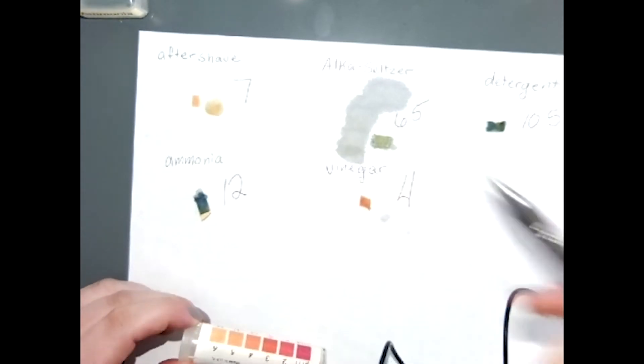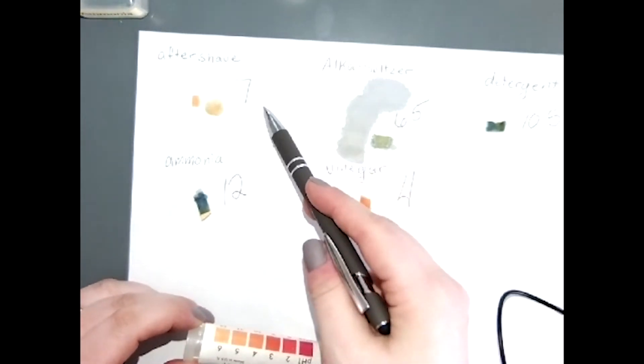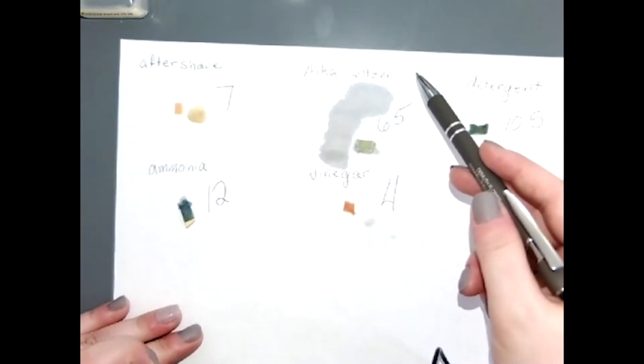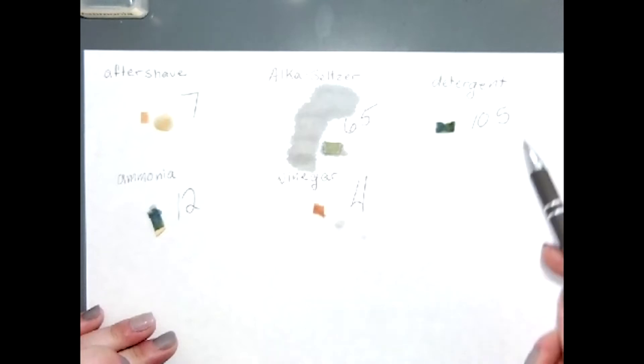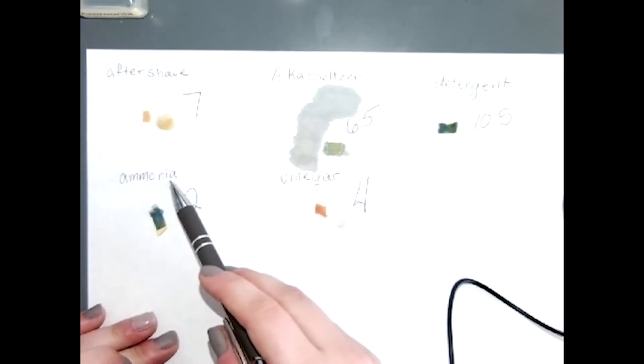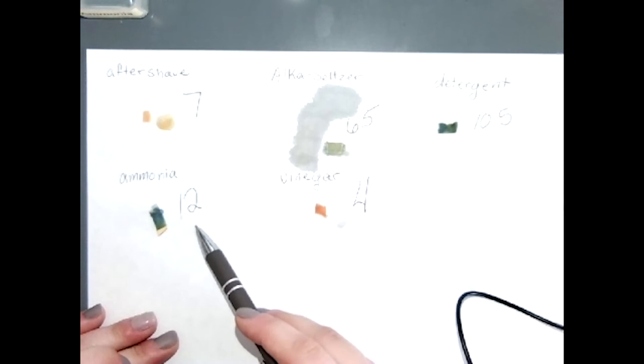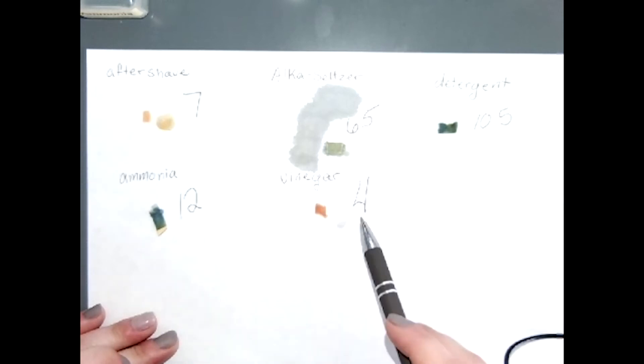So we have aftershave at a pH of seven, alka-seltzer at a pH of six and a half, detergent at a pH of 10 and a half, ammonia at a pH of 12, and vinegar at a pH of 4.